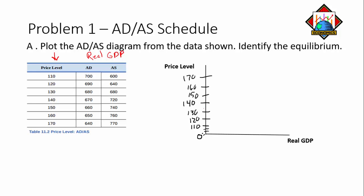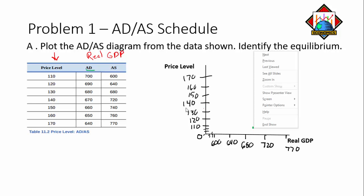Now I'll lay out the aggregate demand and aggregate supply. The low point on the horizontal axis is around 640, so I'll go from 600 as my low to 770 as my high. Aggregate demand is plotted in green, sloping downward from left to right. The first point is at price level 110 with AD at 700, and the next at 120 with AD at 690.